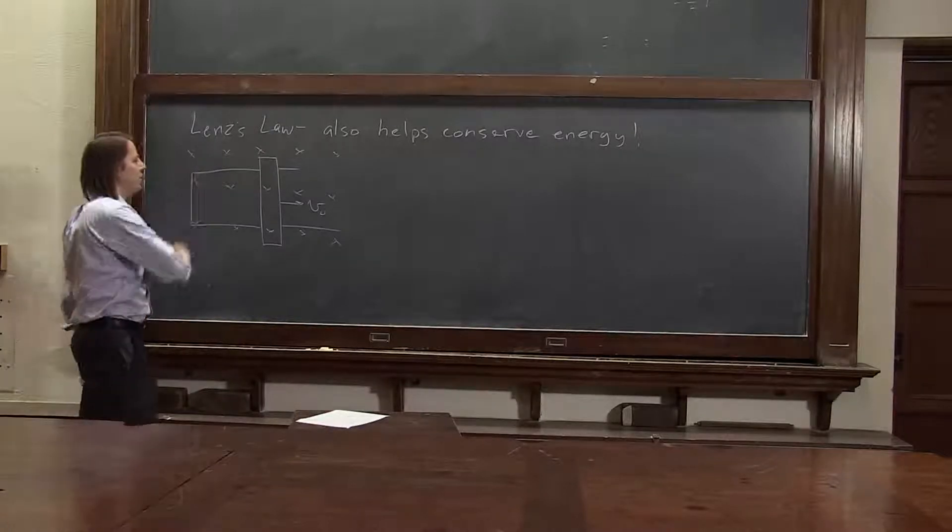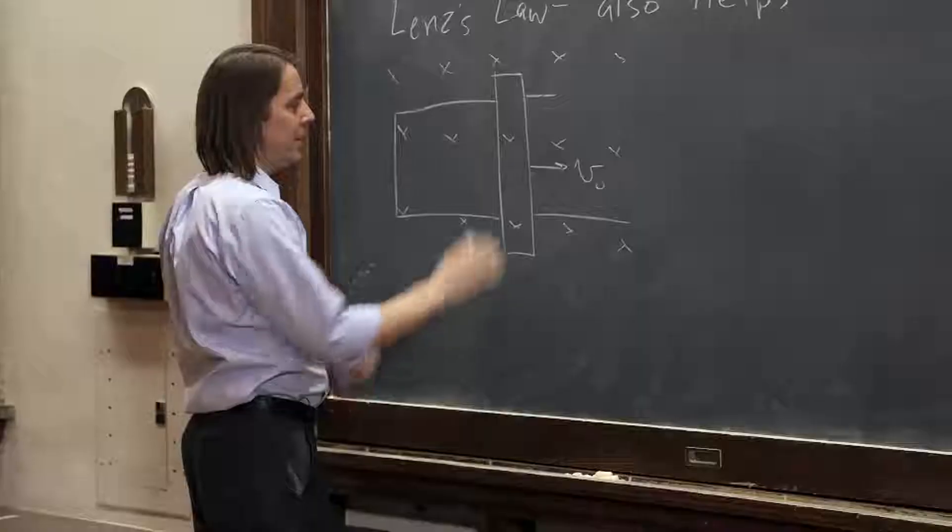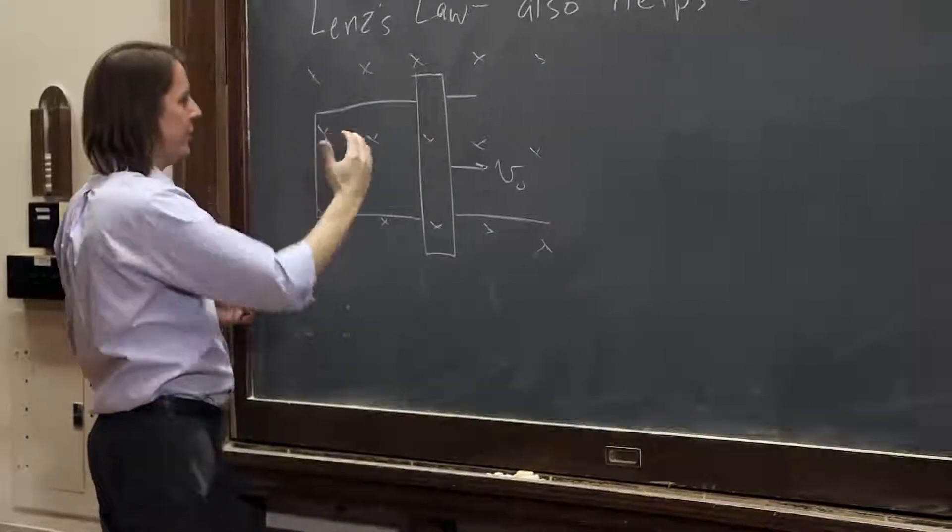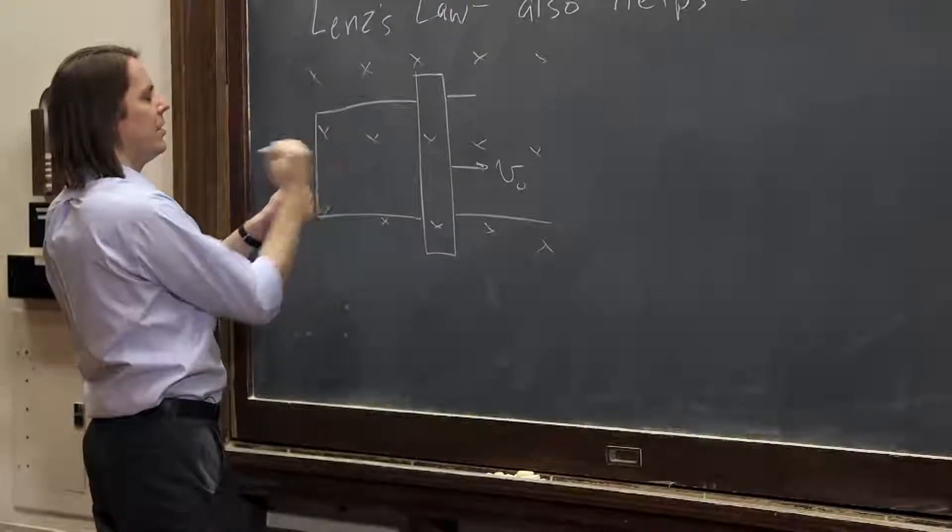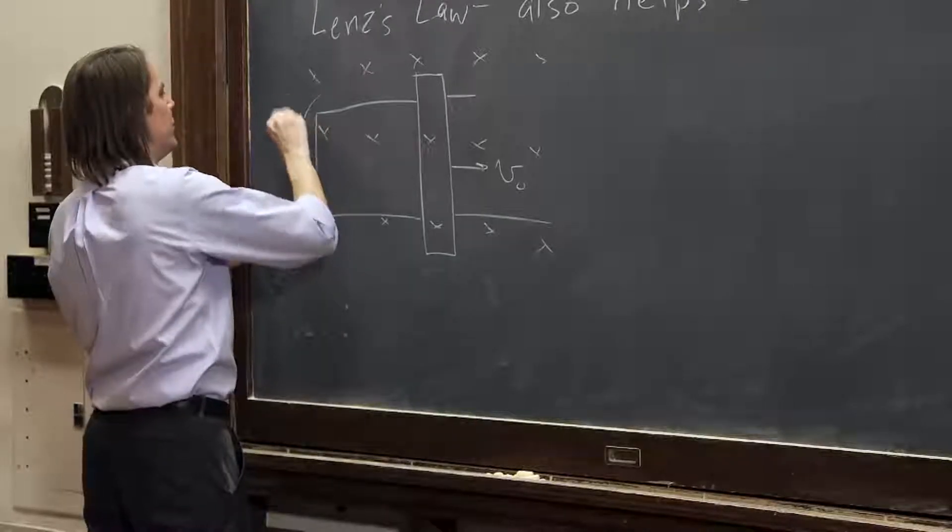It made a current that went around in a way that opposed the change in the flux. Going this way, the flux is getting bigger that way. It wants to make a flux that makes the B-field come out to oppose the increase in the flux that way. That's why the current went around this way.